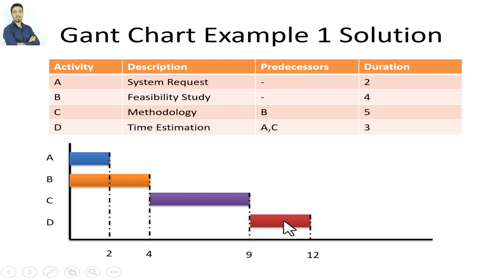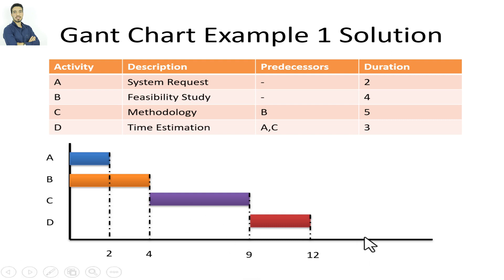I calculate the duration for activity D: 3 plus 5 plus 4 equals 12. From this I get two important pieces of information. The first is the minimum duration for this system, which is the last duration obtained — so the minimum duration is 12. The second important piece of information is the critical path.